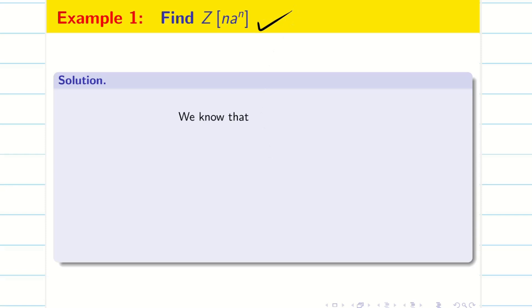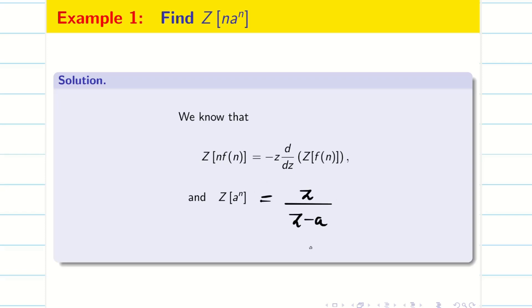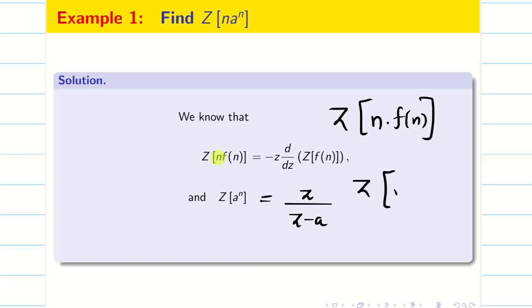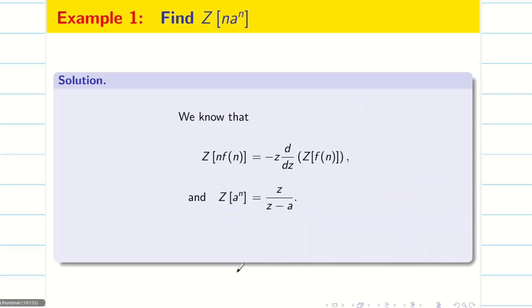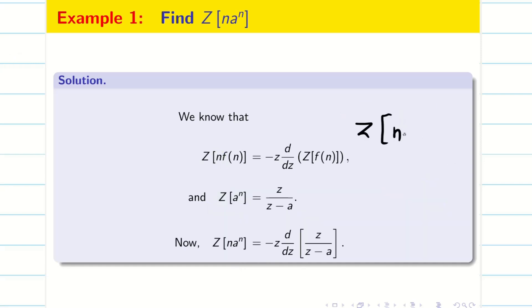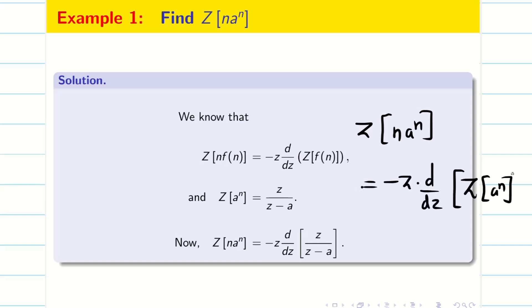Now we are going to solve the same problem using the differentiation in Z property. We know that Z of n into F(n) is equal to minus Z into d/dz of Z of F(n). We know the formula for Z of aⁿ is Z divided by (Z minus a). So Z of n into aⁿ is nothing but minus Z d/dz of Z of aⁿ.